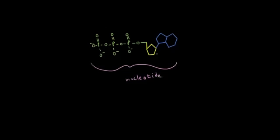A nucleotide is made up of the sugar deoxyribose, the nitrogen base adenine, and then the phosphate groups. And if we had just the sugar attached to a nitrogen base, that would be called a nucleoside — I'm drawing that S big so you notice the difference between a nucleotide and a nucleoside.